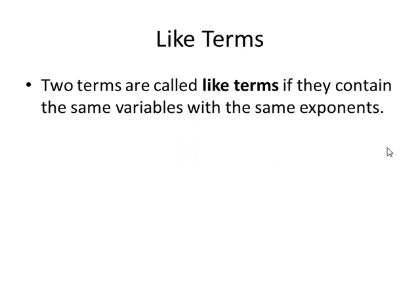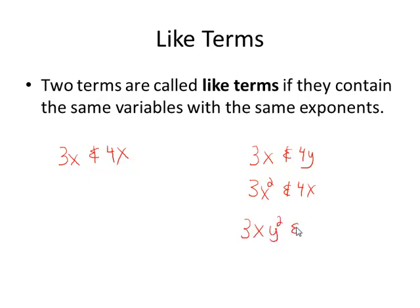Two terms are called like terms if they contain the same variables with the same exponents. Like 3x and 4x. But not like 3x and 4y. Different variables. 3x squared and 4x. Same variable but different exponent. Or even 3xy squared and 4x squared y. Same variables, even the same exponents sort of, but they're not with the same variable. The only term that's like a term with xy squared is another term with xy squared. So these are not like terms.